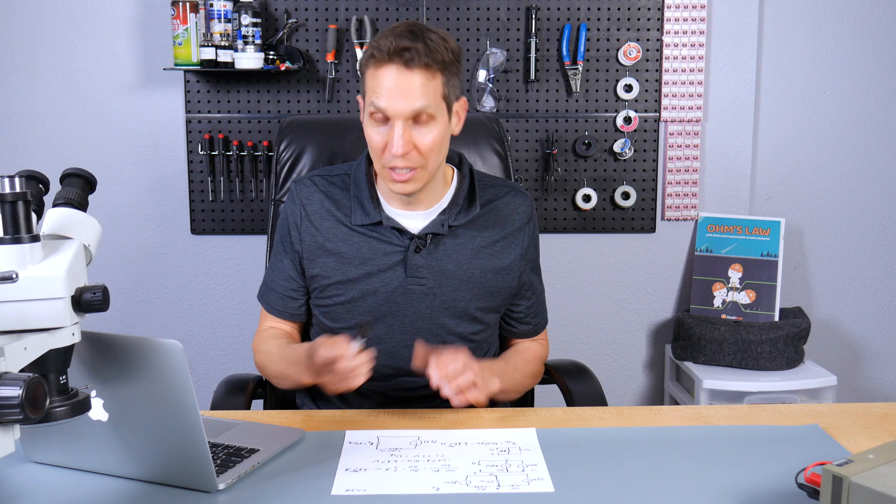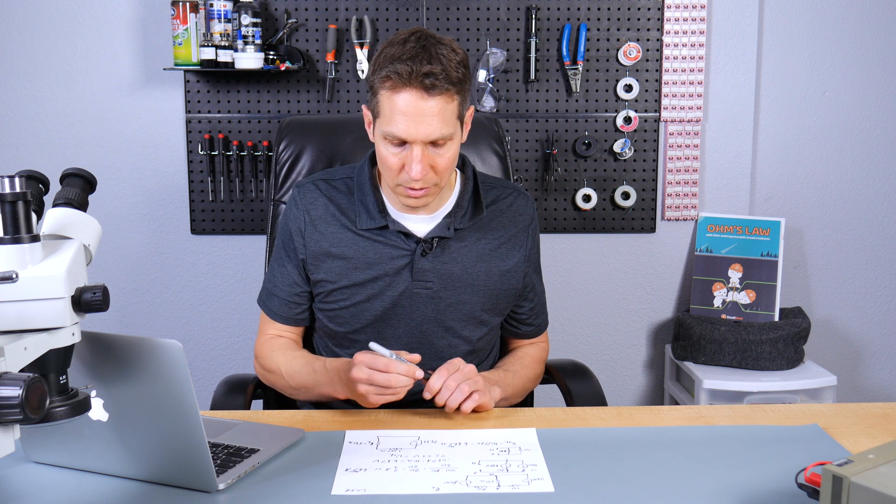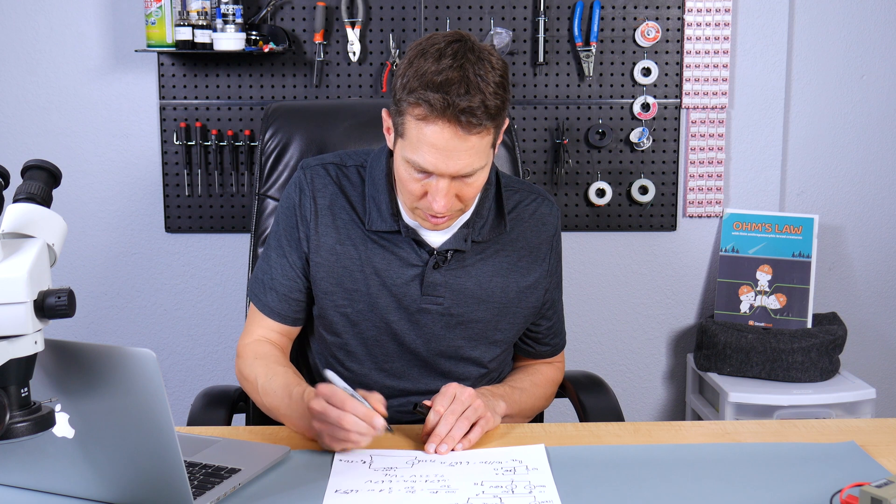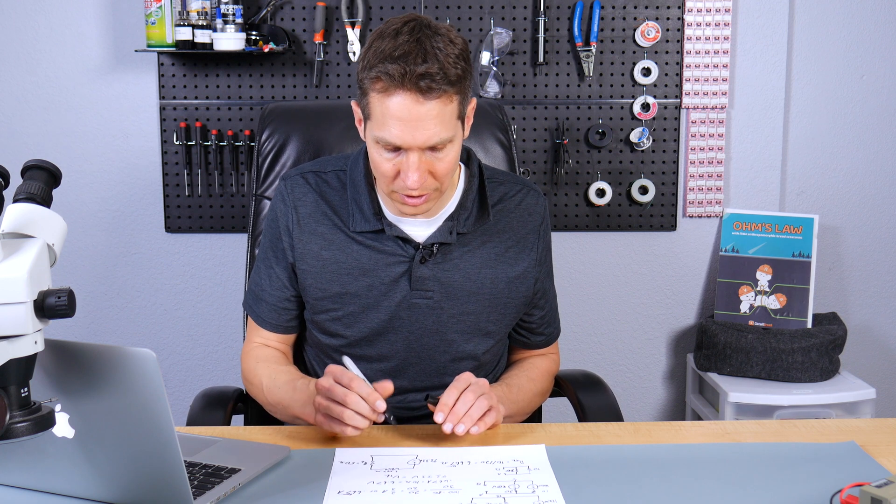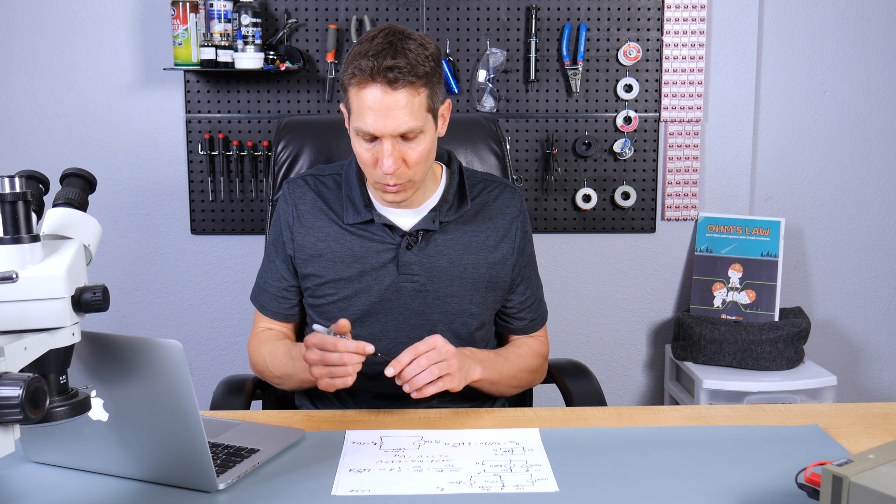So again, other than rounding issues, that all makes sense. And again, that makes sense with the 93.33 volts here. Man, do as I say and not as I do. My units are terrible here. But we do expect there to be a voltage drop over this resistance. And so we do expect that to be, yeah, in the lower 80. That makes sense. All of this makes sense.